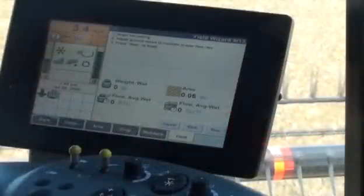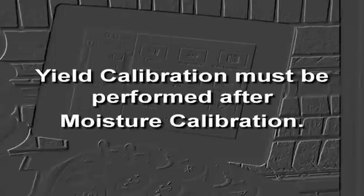Yield calibration must be performed after moisture calibration, because the crop weight and yield will be affected by the crop moisture.